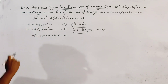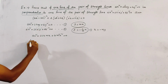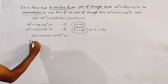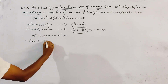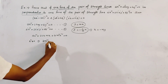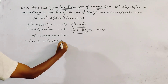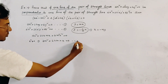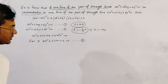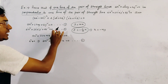Dividing by x², since x² ≠ 0, we get bm² + 2hm + a = 0. We name this as relation number 3.